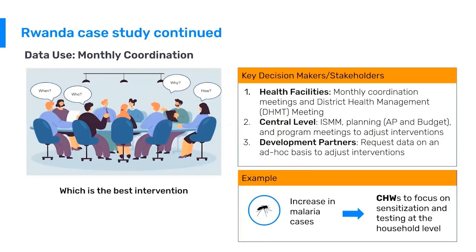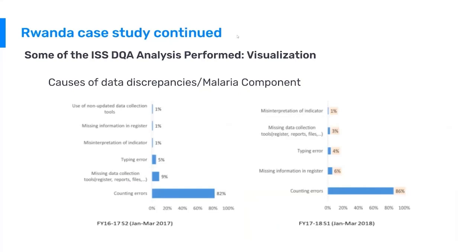Some analysis from their supervision and support process is very interesting: they categorize the types of data quality issues they are seeing. The data shows what kinds of issues are causing the various problems they have detected and corrected. By and large, the vast majority are counting errors — facilities are incorrectly counting from paper records into DHIS2. Other problems include missing information in registries, typing errors, missing data collection tools, and misinterpretation of an indicator. However, counting errors represent the dominant category, and this is likely a reasonable expectation in most countries.